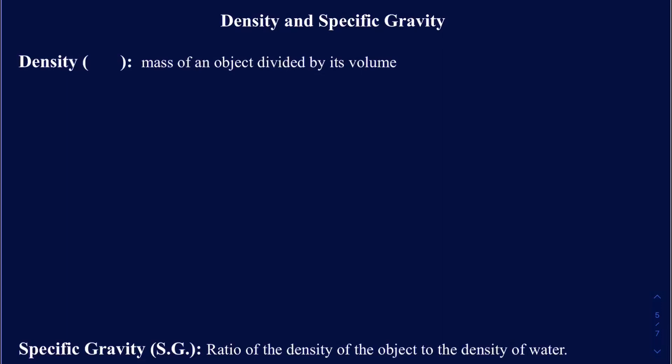In this tutorial we're going to be talking about density and specific gravity. Let's focus on density first. Density has a symbol called rho, which is a Greek letter. It's defined as the mass of the object divided by its volume. In mathematical form, density equals mass (symbol m) divided by volume (symbol uppercase V).